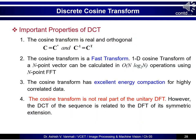There are important properties of DCT. First, the cosine transform is real and orthogonal, meaning kernel C equals C conjugate and C inverse equals C transpose. Second, the cosine transform has a fast transform — the 1D cosine transform of an N-point vector can be calculated with order N log base 2 of N, similar to the FFT algorithm. Also, the cosine transform has excellent energy compression property, which is why it is widely used in many image compression algorithms.